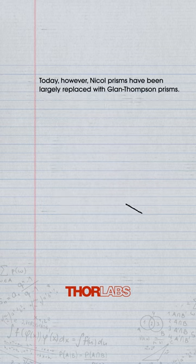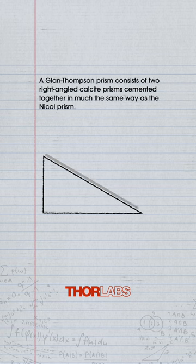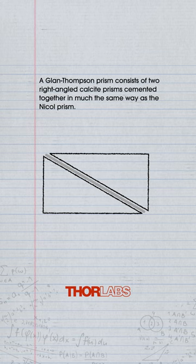Today however, Nicol prisms have been largely replaced with Gland-Thompson prisms. A Gland-Thompson prism consists of two right-angled calcite prisms cemented together in much the same way as the Nicol prism.